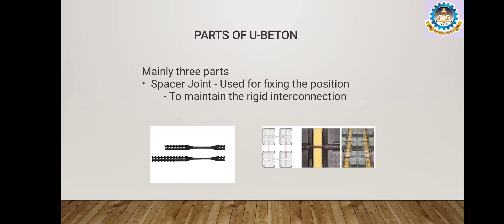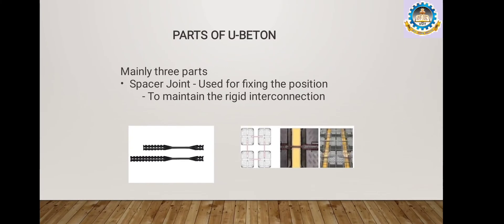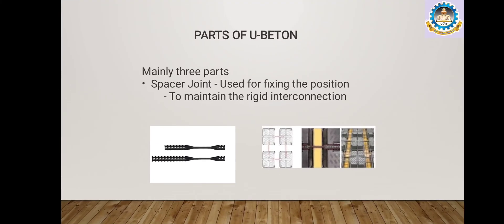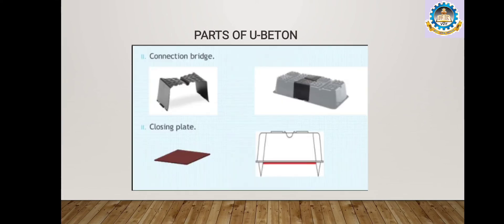Let's familiarize with the parts of U-boot Beton. It consists of three parts: the spacer joint, the connection bridge, and the closing plate. Firstly, the spacer joint — it is used to join two or more U-boot Betons while fixing on the shuttering, so that there cannot be any change in the distance between the gaps of U-boot Beton.